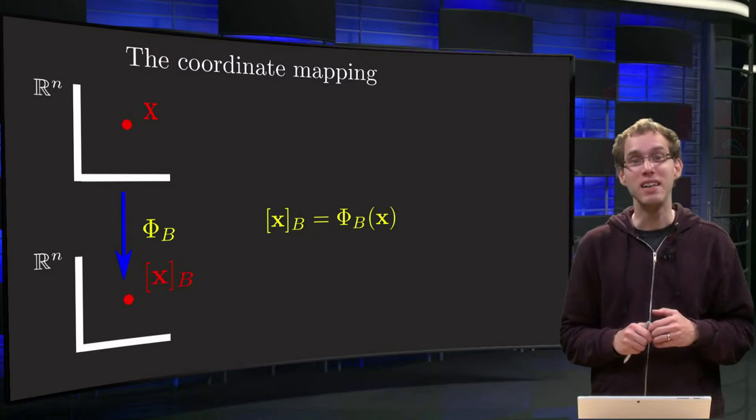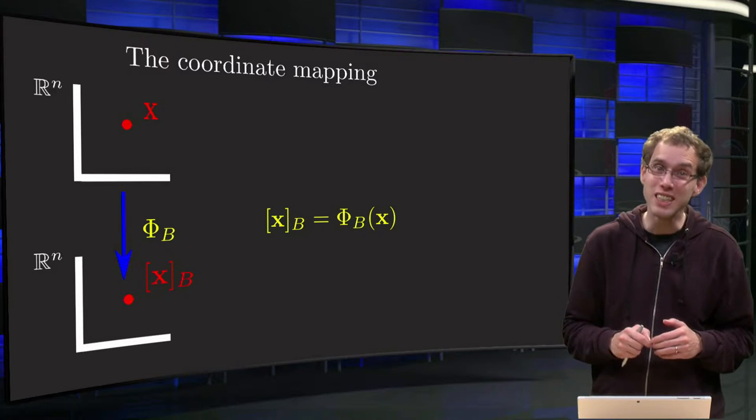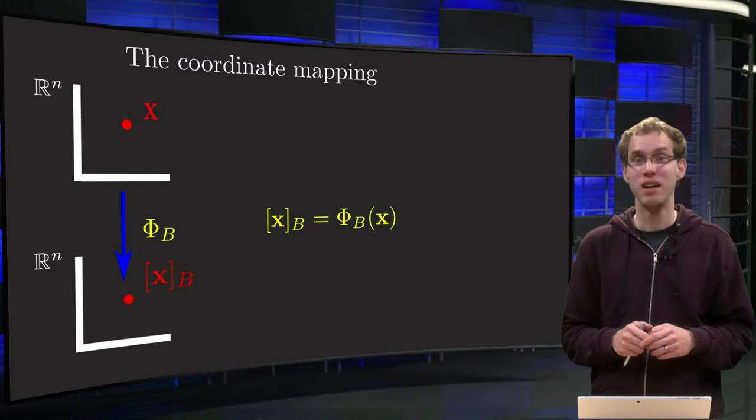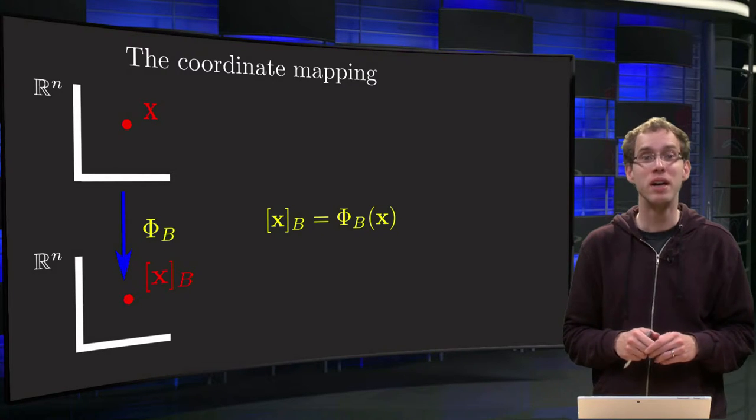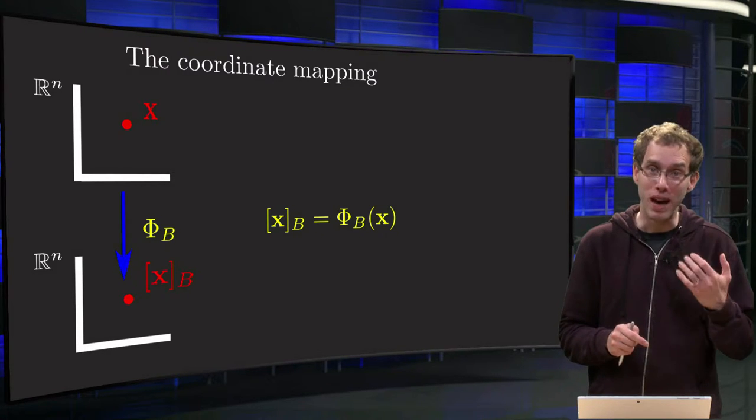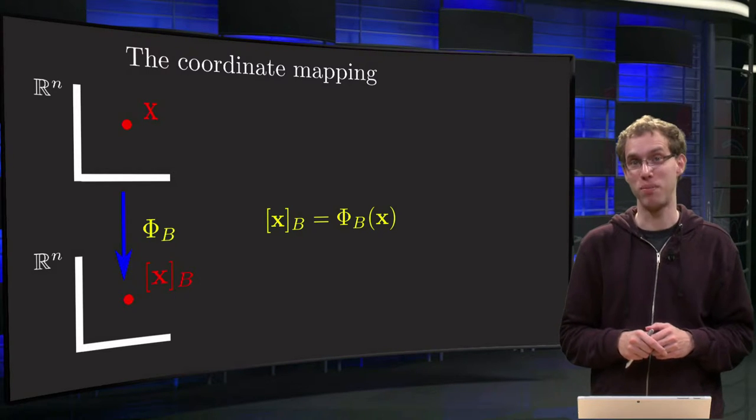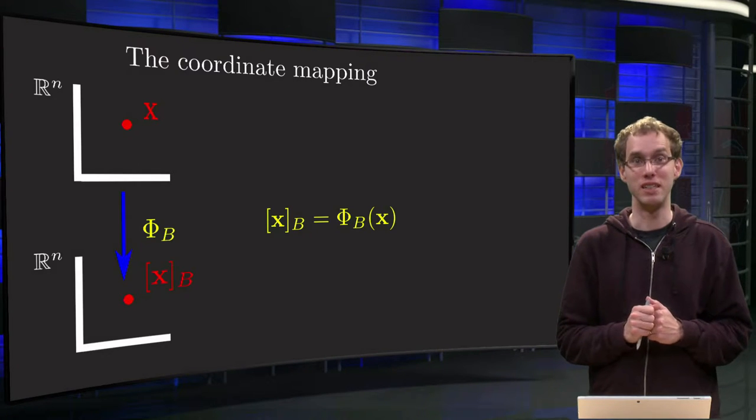Taking V and W equal to Rn means that our original transformation is implemented by some matrix A. And even better, our coordinate mapping is now implemented by a matrix as well. So this means that we will be able to find our matrix M as a product of some matrices. How? That's what you will learn in this video.